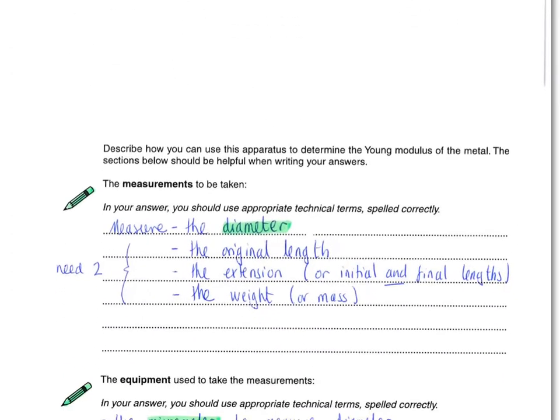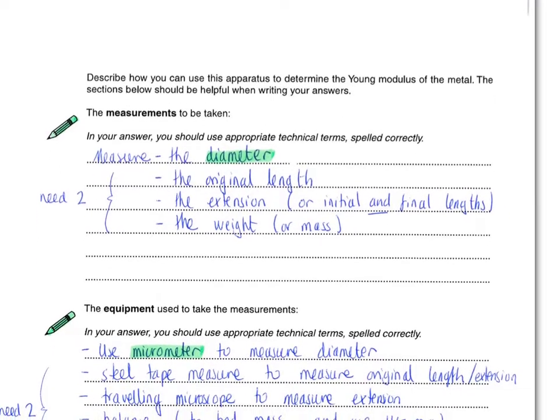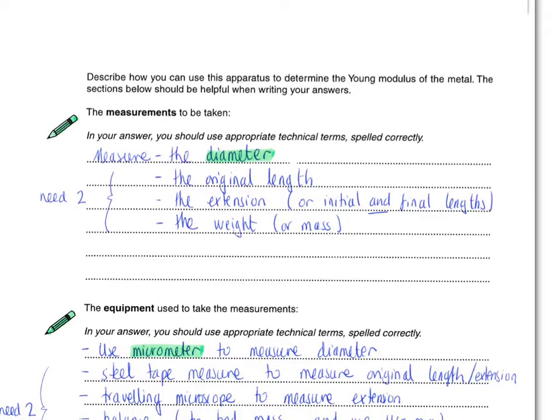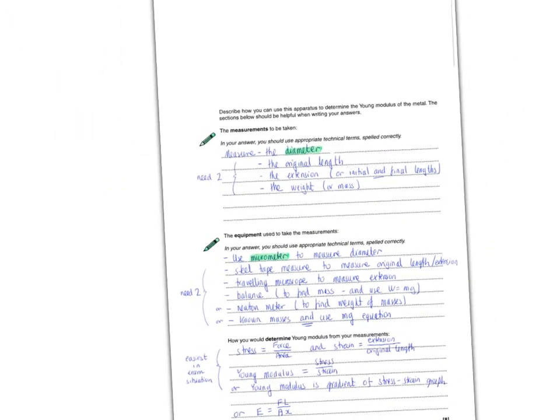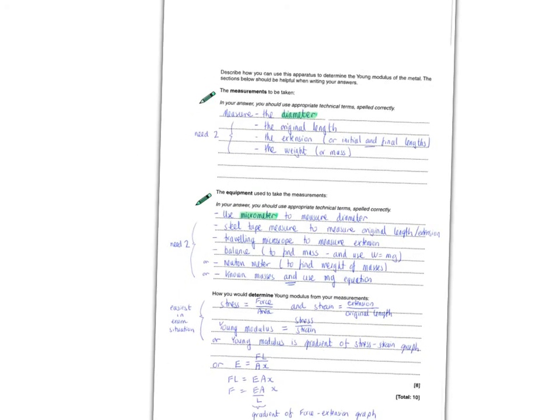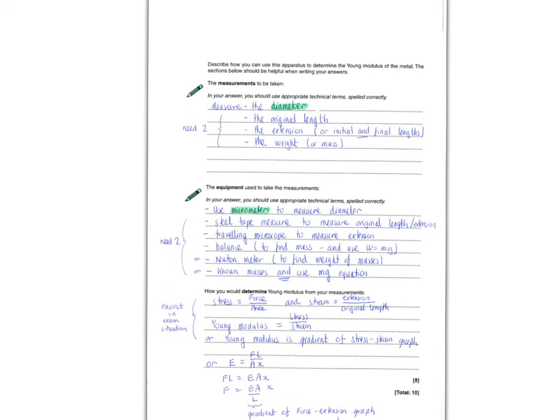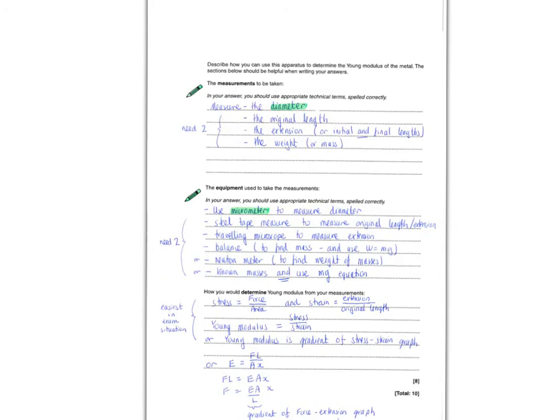So what does it ask us? Describe how you can use the apparatus to determine the Young's modulus of the metal. The sections below should be helpful when writing your answers. These actually, if I just zoom this down, these actually show us very, very standard, useful ways of thinking about any question when you're asked about an experiment.